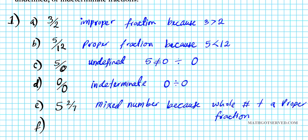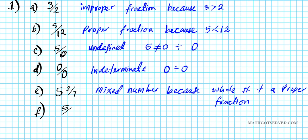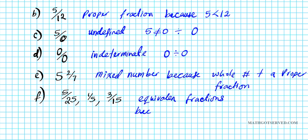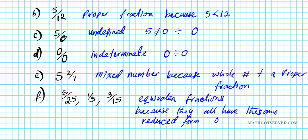Now what if we have a collection of fractions: 5 over 25, 1 over 5, and 3 over 15? What kind of fractions are these? These are known as equivalent fractions. Why are they equivalent? Because they all have the same reduced form of 1 over 5. If you reduce all three fractions, you end up with 1 over 5 as the lowest term.